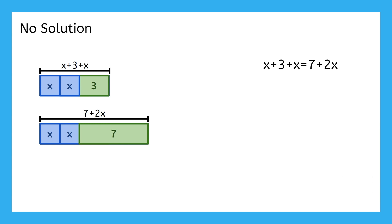What happened? You probably simplified the left side, and then subtracted 2x from both sides. Since the variables match on both sides, they will all cancel out, leaving 3 equals 7.